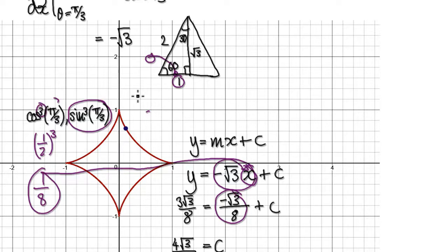And then this thing here would give us our y location. Sine pi over 3 would be root 3 over 2.